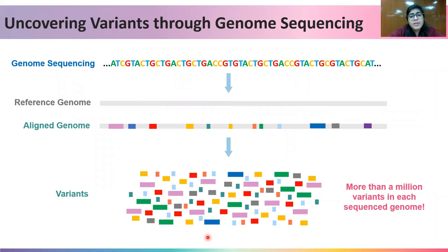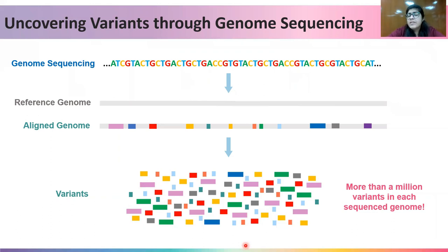As we know, whenever we sequence a genome and align it to the reference genome, we get about a million variants in a file known as a VCF file, or variant call format file, which will only give you the chromosomal positions, chromosome number, reference, and alternate alleles. Besides that, you will not be able to know through a VCF file what the relevance of these million variants is.